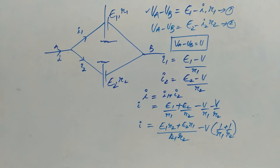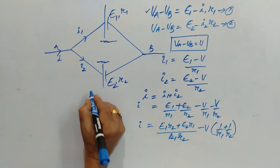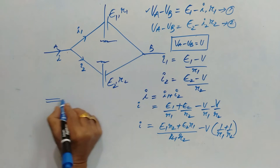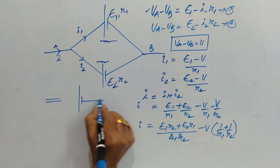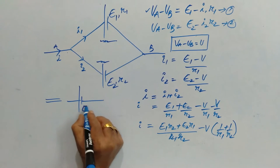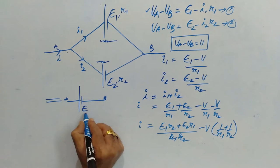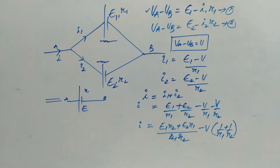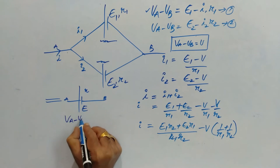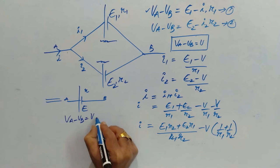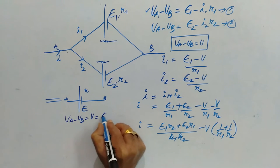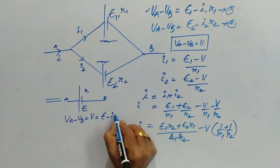So, this is all equal to I. Now, if we write an equivalent circuit as E as resultant EMF and R as resultant internal resistance,